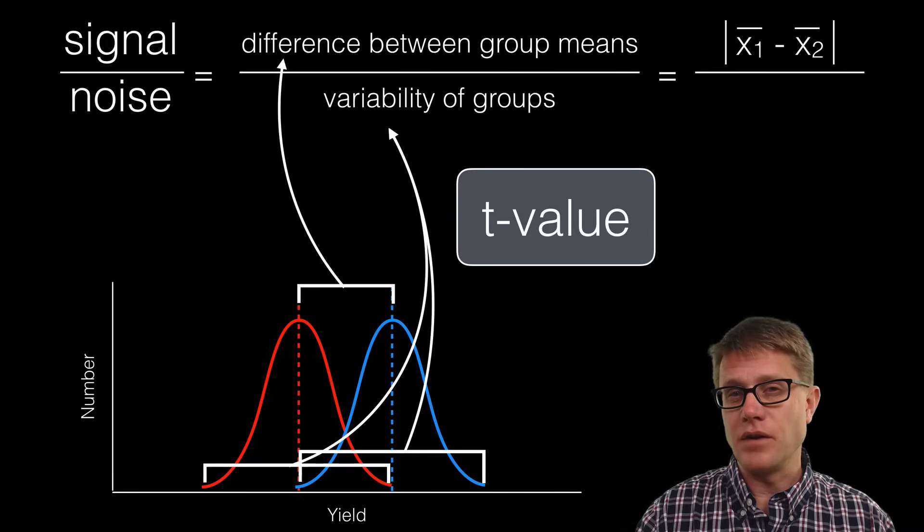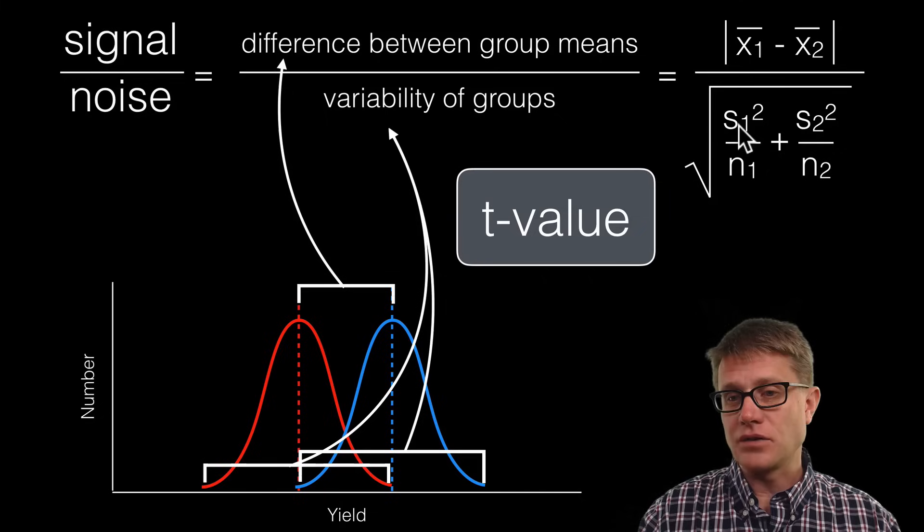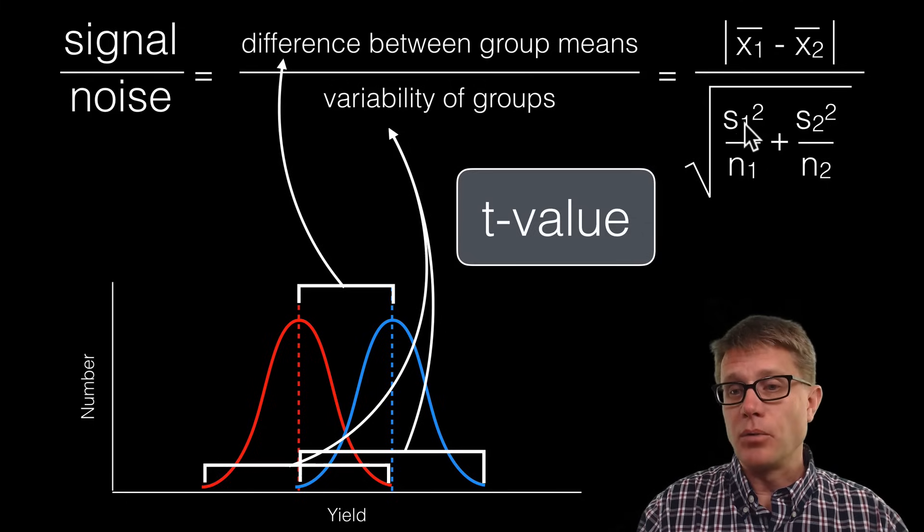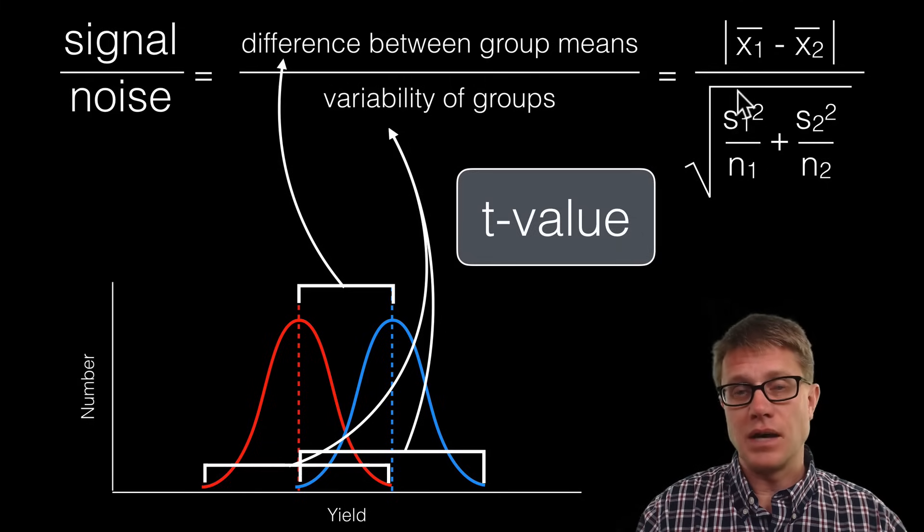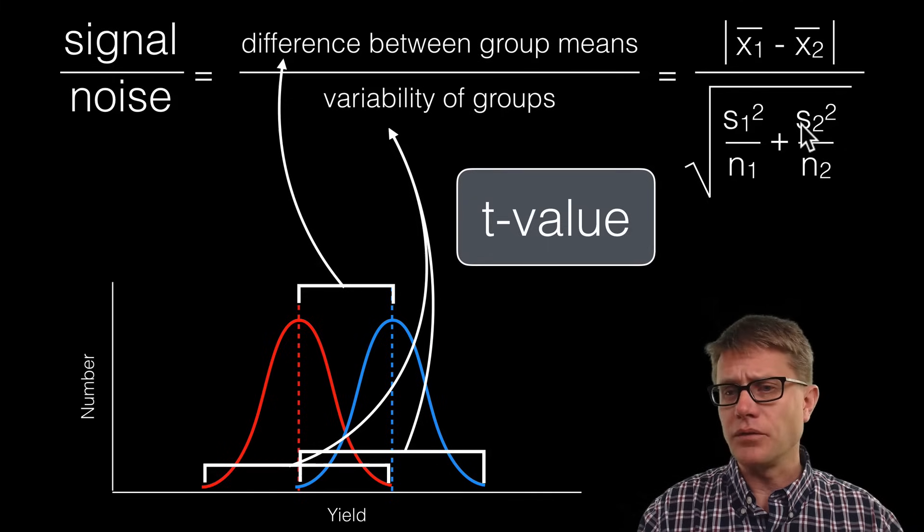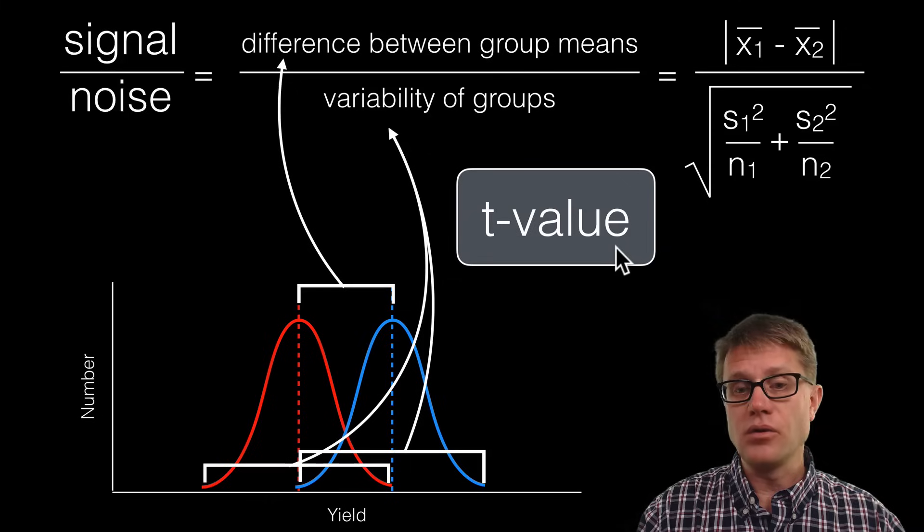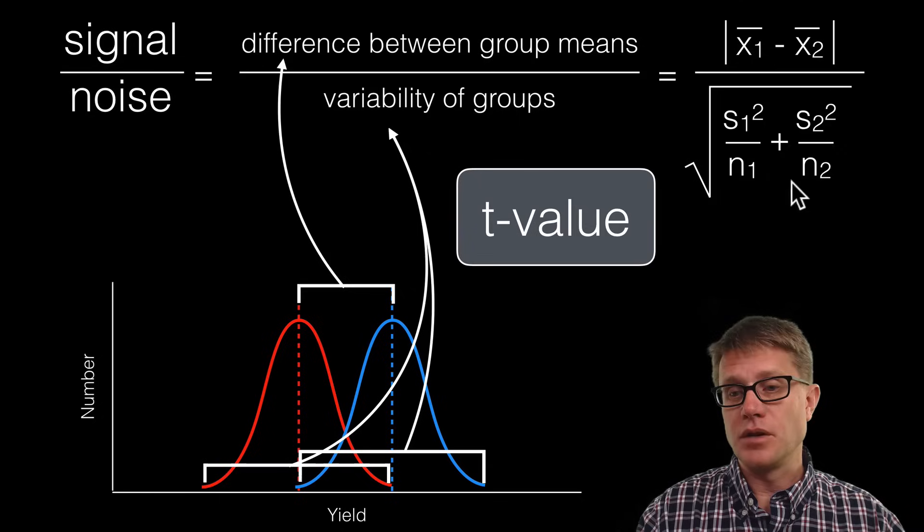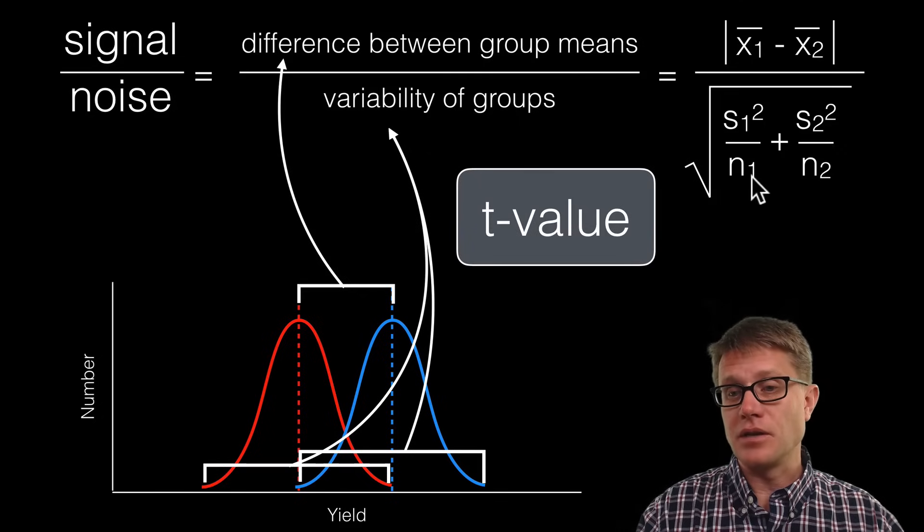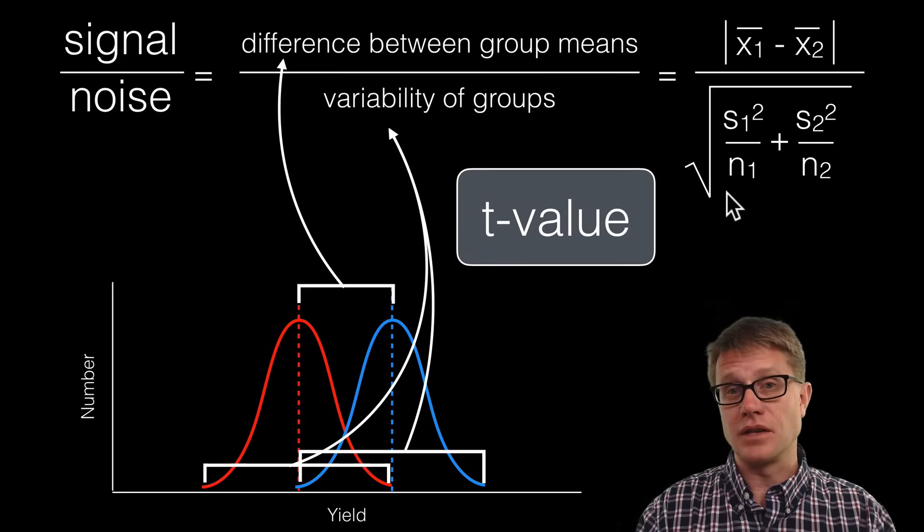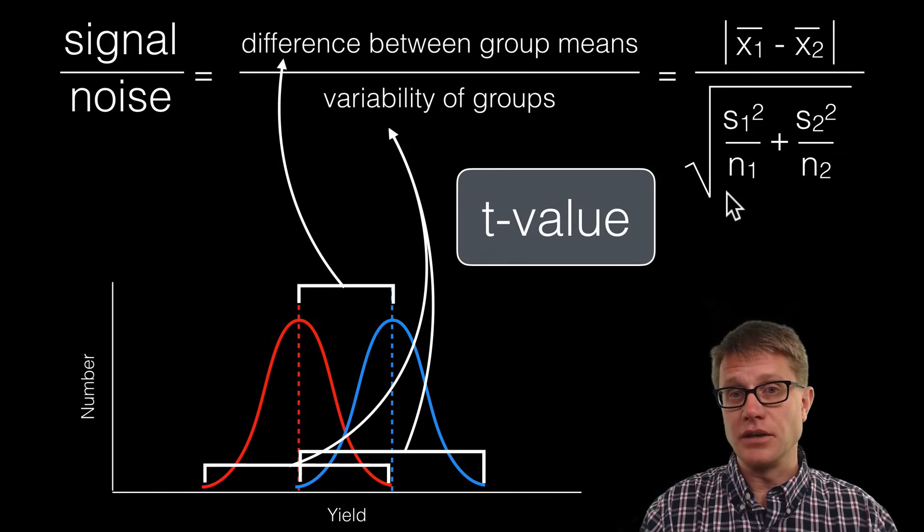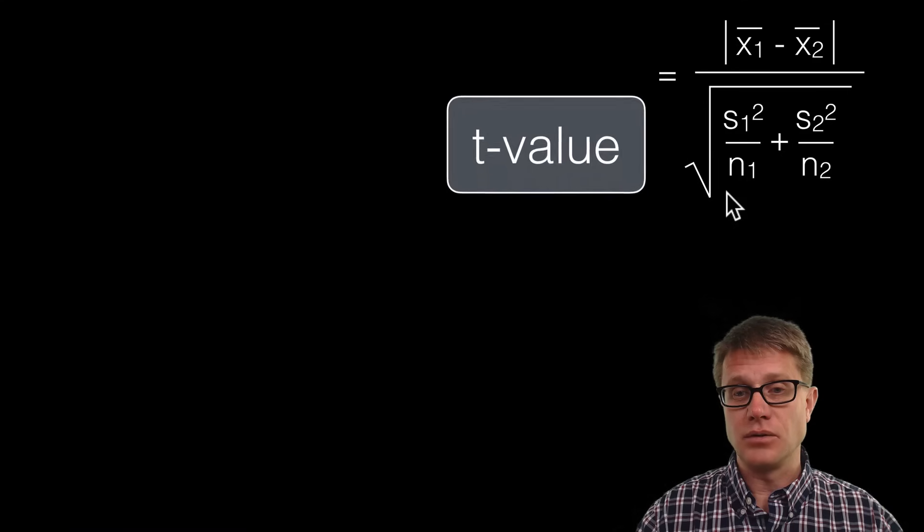If I calculate the mean in sample one (x̄₁) and x̄₂, the absolute value or the difference between the two is going to tell you how much signal there is. How do we get at the noise? That's in the variability of the groups themselves. S₁ is the standard deviation—how far our data is spread from the mean. But we're not only taking the standard deviation, we're actually squaring that, which gives us something called the variance. If I increase the variance, that's going to lower my t-value. The other factor is the number of samples. As I increase the number of samples, that will actually increase the signal up to a point. Increasing variability will decrease it.